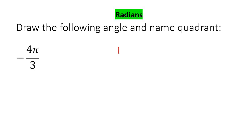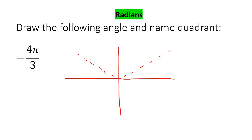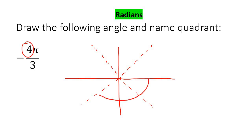Here is our last example: negative four pi over three. I'm going to make three parts — once again going there and there, not using the x-axis as one of them. If we're going to go negative four: one, two, three, four — remember we're not counting this as one of them, so that's one, two, three, four. So we're definitely going to be in quadrant number two.